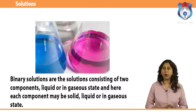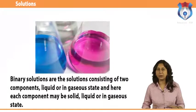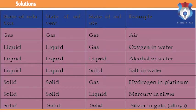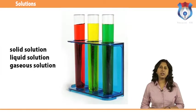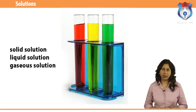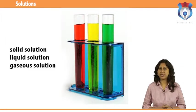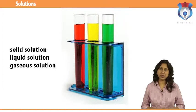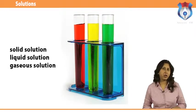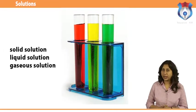Binary solutions are the solutions consisting of two components, and each component may be solid, liquid, or in gaseous state. Table 1 shows the various types of binary solutions. When the solvent is in solid state, the solution is called a solid solution. When the solvent is in liquid state, it is called a liquid solution. When the solvent is in gaseous state, it is called a gaseous solution. Solid solutions are very common — most natural minerals and many metallic alloys are solid solutions.